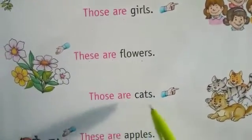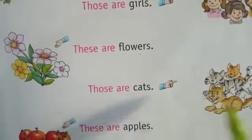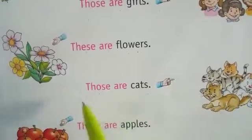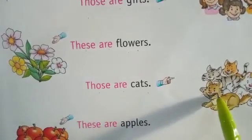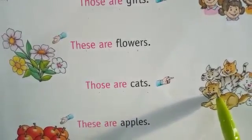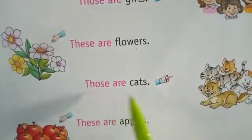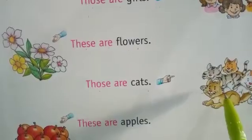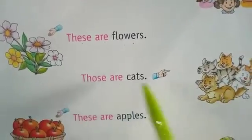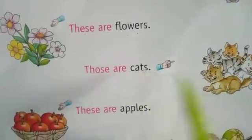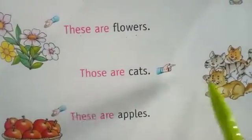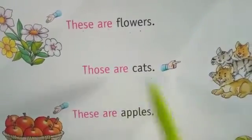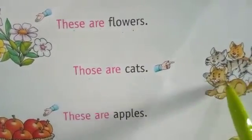Those are cats. Those are cats. Woh billiyan hain. One or more cat hain, toh cats ho gaya. Woh sab billiyan hain.